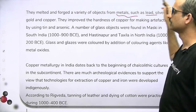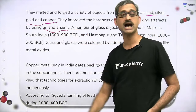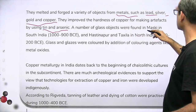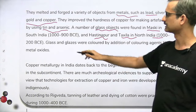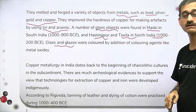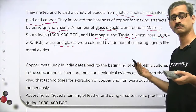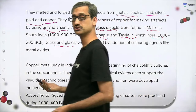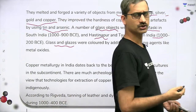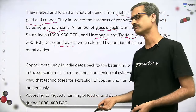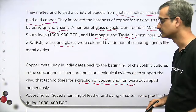They melted and forged a variety of objects from metals — lead, silver, gold, and copper. They improved the hardness of copper for making artifacts by using tin and arsenic, effectively making alloys. Glass objects were found in Muski in South India, and glass and glazes were made in Hastinapur and Takshila in North India, colored by adding metal salts. Copper metallurgy in India dates back to the very beginning of the Chalcolithic age.